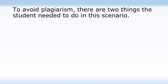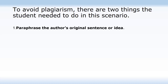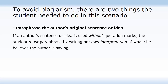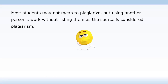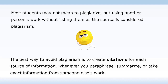To avoid plagiarism, there are two things the student needed to do in this scenario. First, paraphrase the author's original sentence or idea — if an author's sentence or idea is used without quotation marks, the student must paraphrase by writing her own interpretation of what she believes the author is saying. Second, provide an in-text citation. By providing a citation, the student gives credit to the author whose idea she is using in her paper.